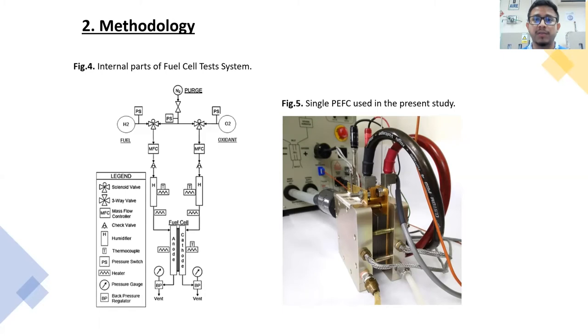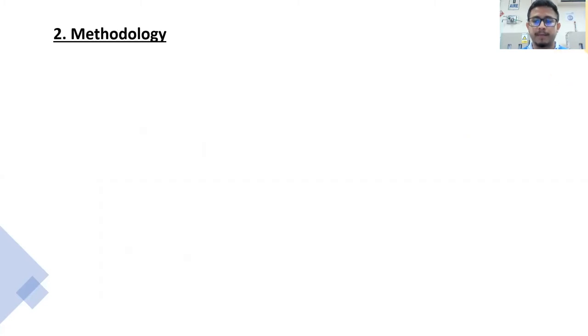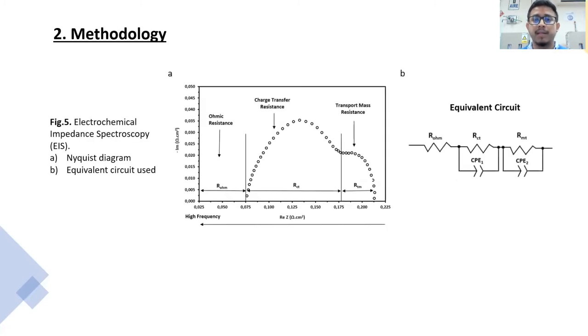After configuring the experimental parameters, the electrochemical impedance spectroscopy test was applied to obtain ohmic resistance, and with the help of the equivalent circuits for modeling to obtain better results.